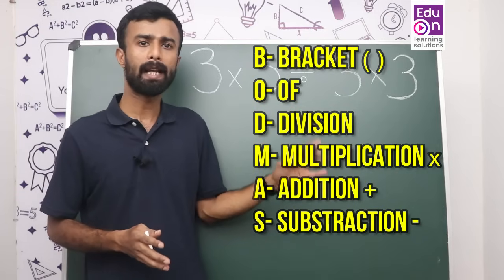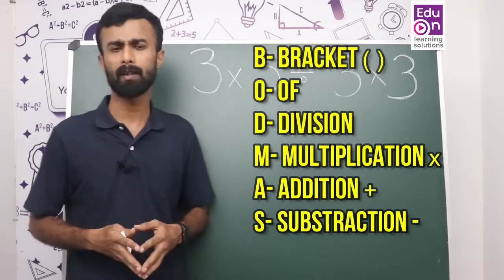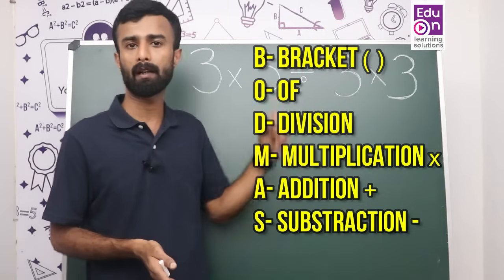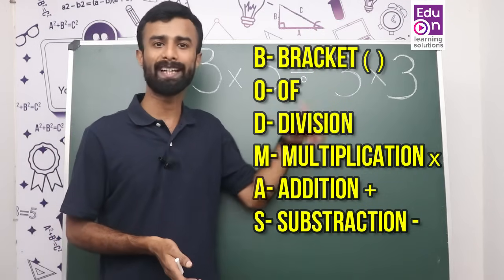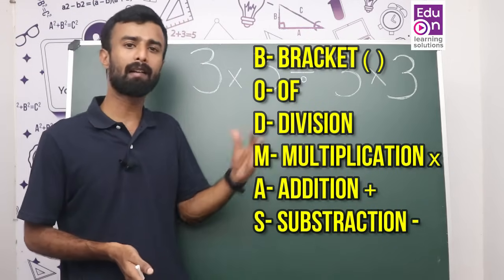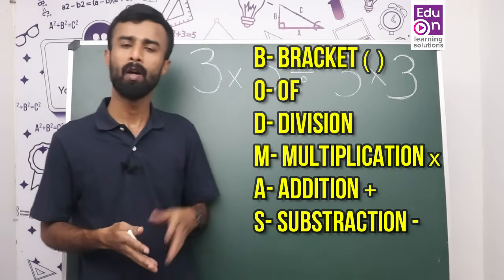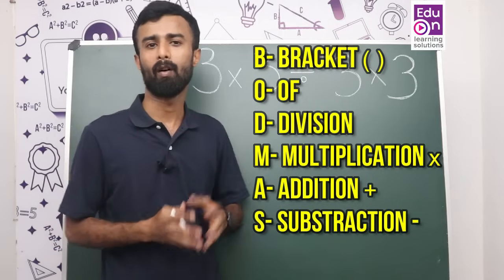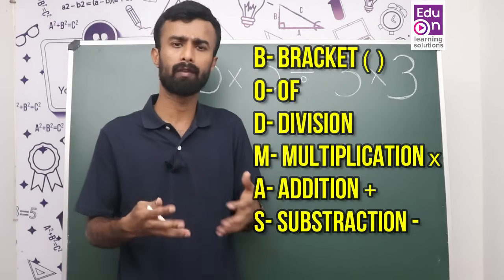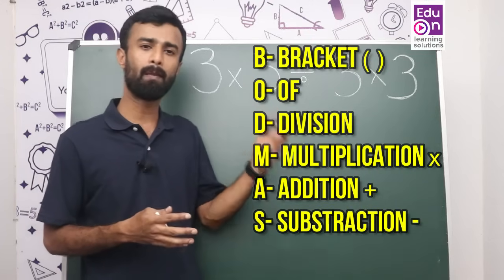It is B-O-D-M-A-S. B is for bracket — track it. Then, if you raise the type of bracket, B is the first priority. Then O is 'off' — meaning multiplication. For example, the question of 20 of 30: this is the question of 'off' multiplication. If you have 20 of 30, that means multiplication.